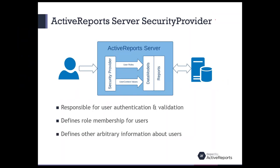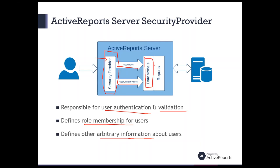So what is the security provider all about? In Active Reports Server, the security provider is essentially the layer between all access to data models and reports for the user. When a user logs in, they go through the security provider, which authenticates, validates, and passes the user role information and user context values — things like tenant ID, customer ID, company ID, and user ID — which are used for permissions, filtering, and querying data in models and reports.